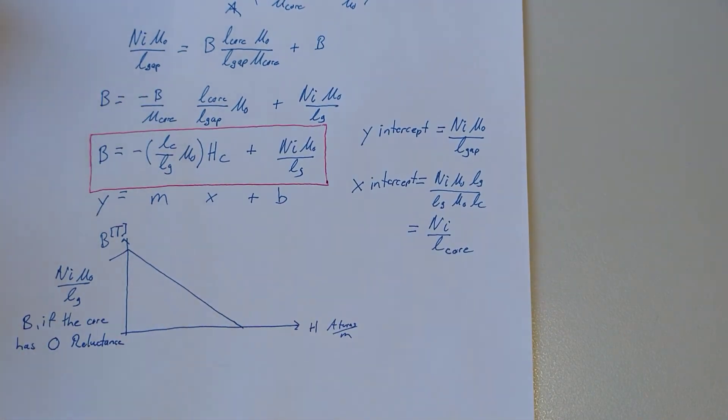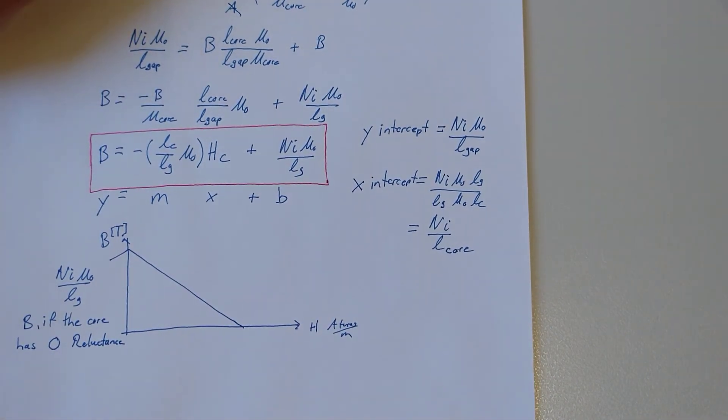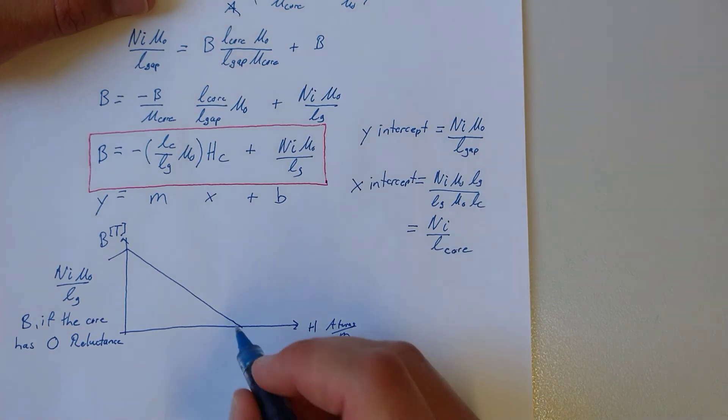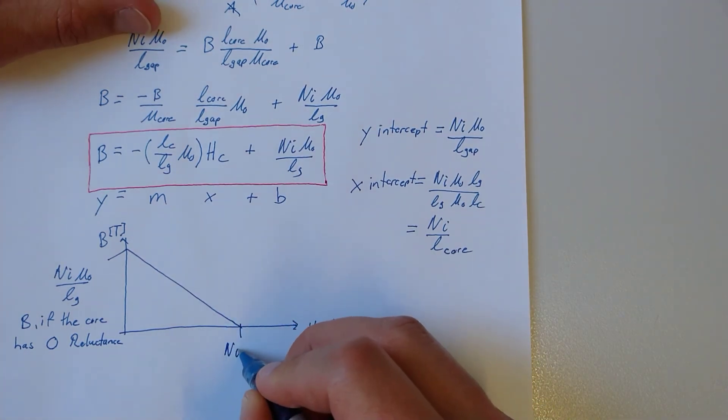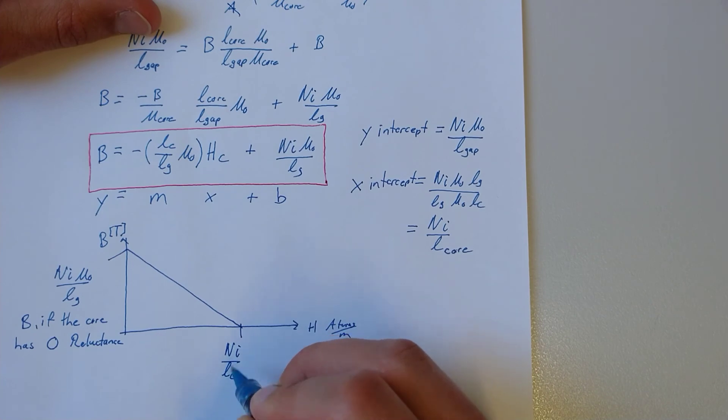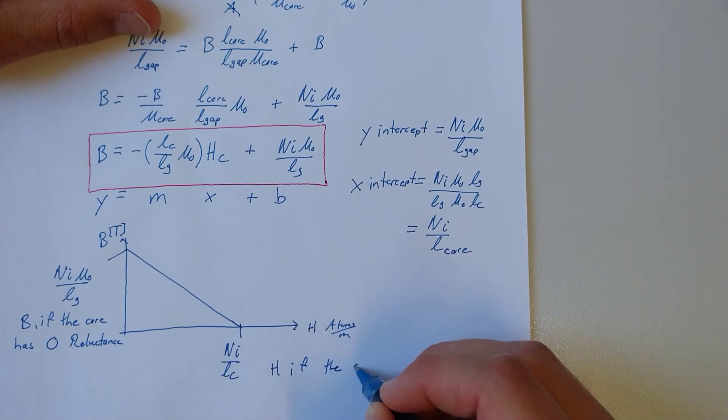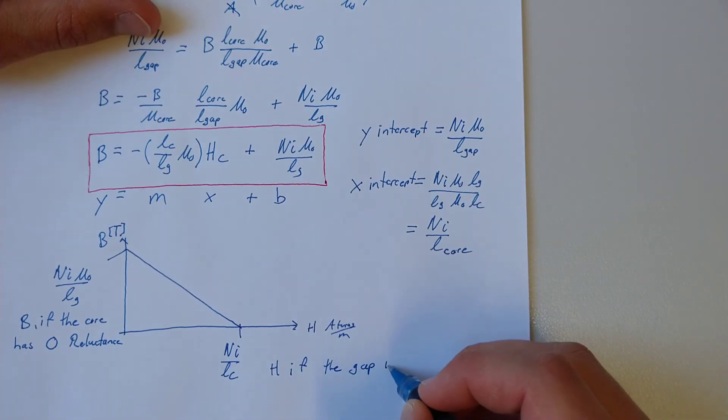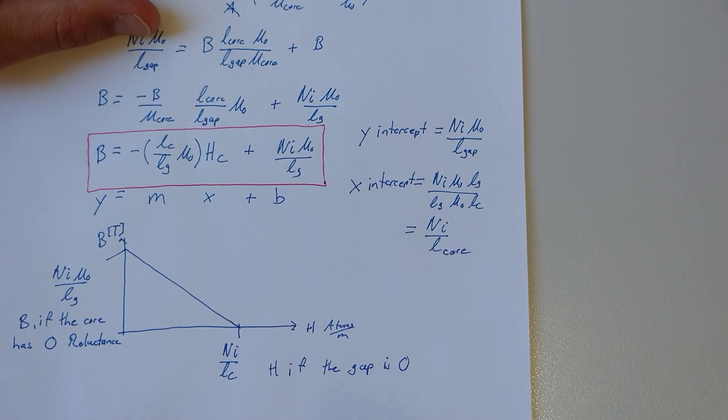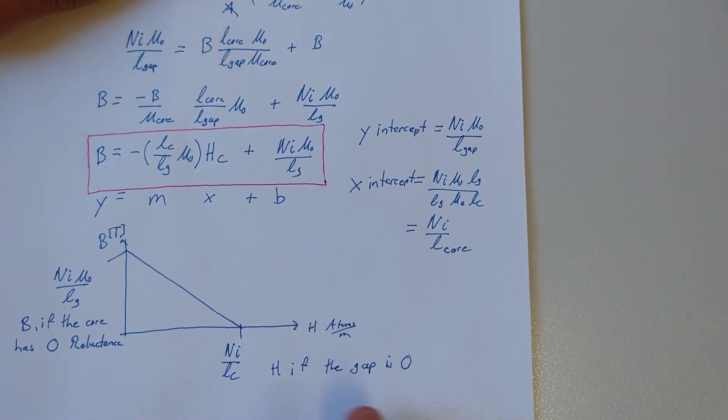And that's a good starting point if you have to estimate, usually. Now this intercept is NI over LC, and that is H if the gap is 0, as in the previous example that we did.